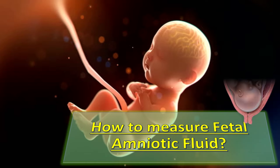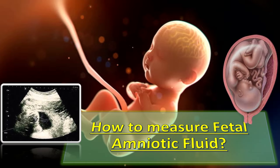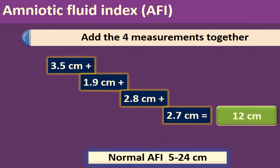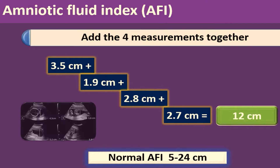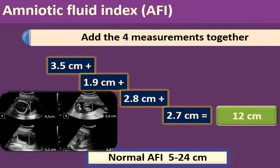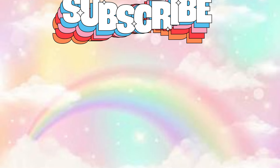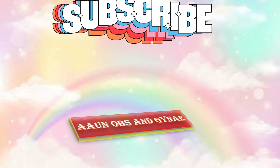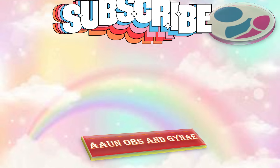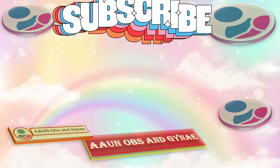For estimation of amniotic fluid volume, we measure the amniotic fluid index. We measure the deepest vertical pool of amniotic fluid in different quadrants and add the measurements together to get the AFI, or amniotic fluid index. That was all about fetal biometry and fetal measurements.